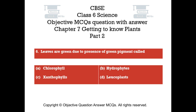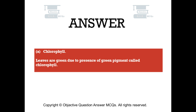Question number six. Leaves are green due to the presence of a green pigment called: Option A chlorophyll. Option B hydrophytes. Option C xanthophylls. Option D leucoplasts. The right answer is option A — chlorophyll. Leaves are green due to the presence of the green pigment called chlorophyll.